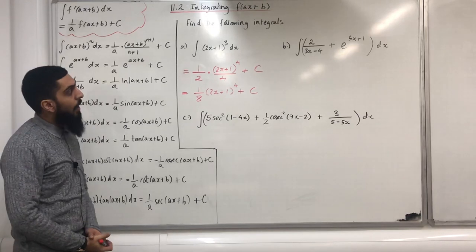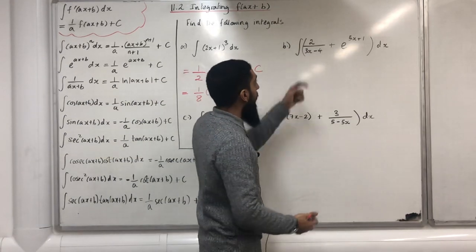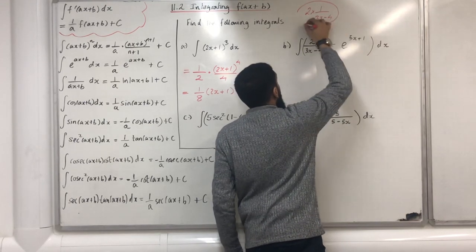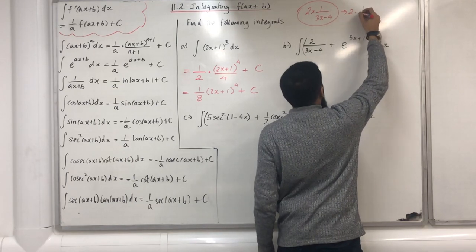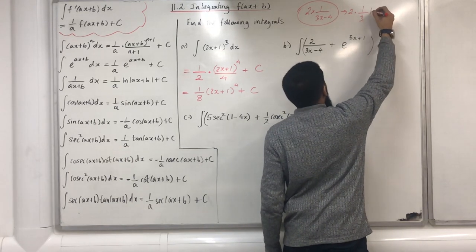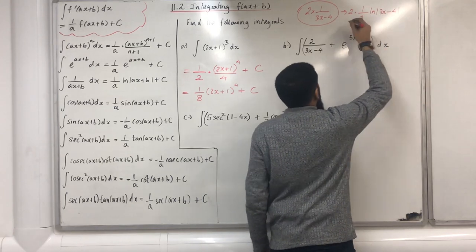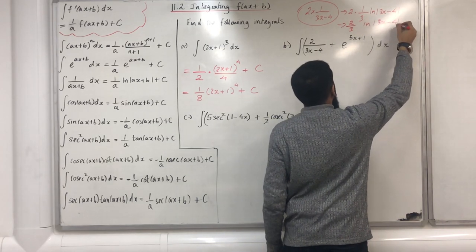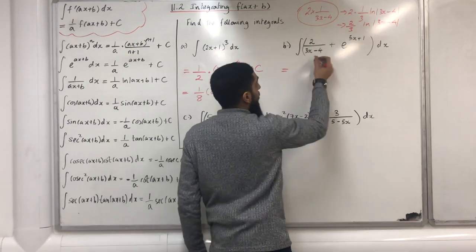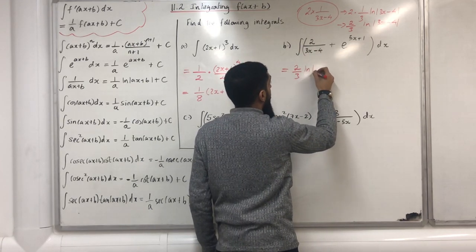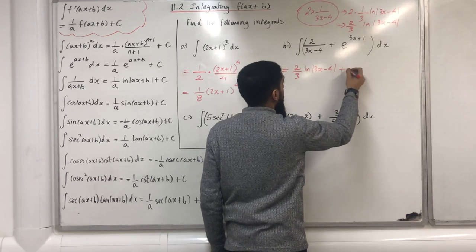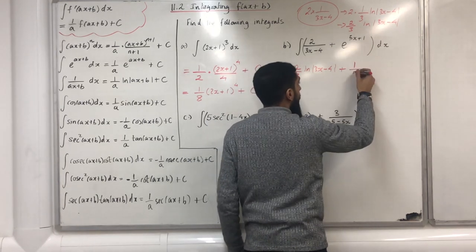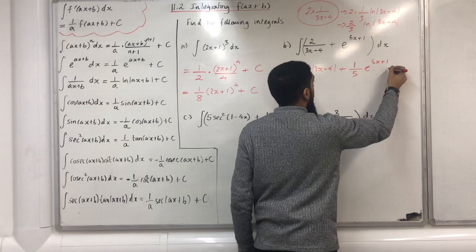Moving on to part b. The first term over here can be rewritten as 2 multiplied by 1 over (3x − 4), and this integrates to 2 multiplied by 1 over the coefficient of x, which is 3, times ln|3x − 4|, which simplifies to 2 over 3 ln|3x − 4|. The second term integrates to 1 over the coefficient of x, in this case 5, times e to the power of (5x + 1) + c.